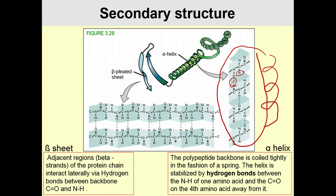The other common secondary structure is the beta sheet, where one stretch of amino acids and a second stretch come alongside each other and are joined laterally by hydrogen bonds. Two different sections of the same protein come into close physical proximity and form hydrogen bonds, locking them into a beta-pleated sheet.